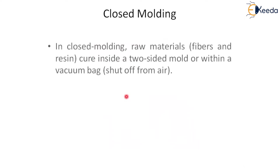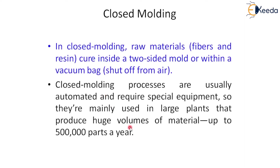In closed molding, raw materials are placed inside a two-sided mold or within a vacuum bag. The important feature is that raw materials are enclosed inside the mold or vacuum bag. Closed molding processes are usually automated and require special equipment, so they are mainly used in large plants that produce huge volumes — up to almost 500,000 parts per year.